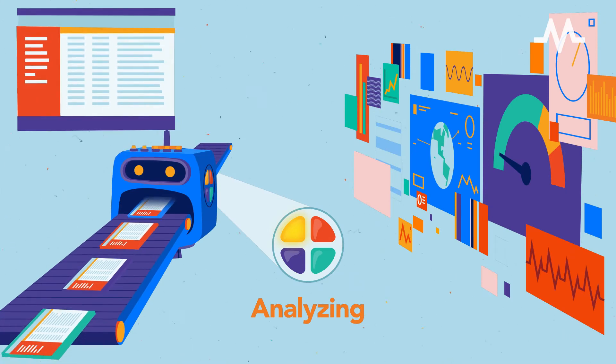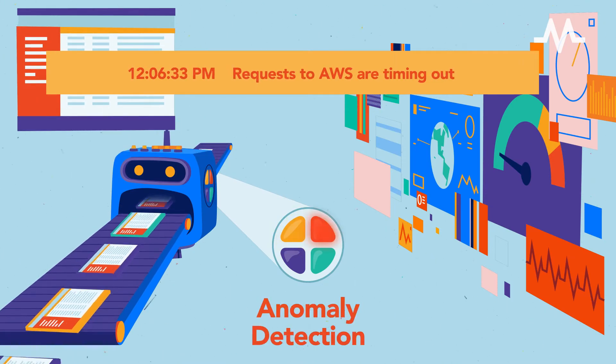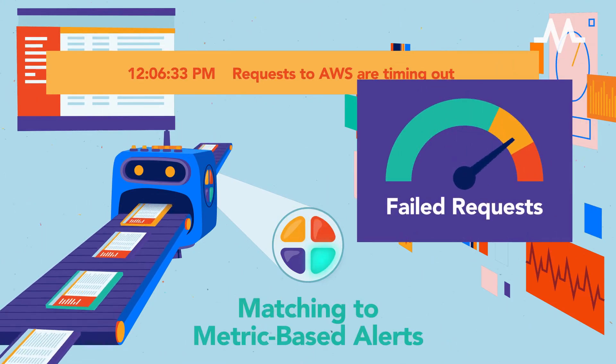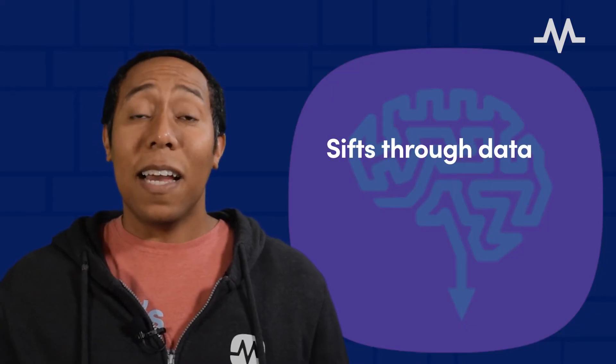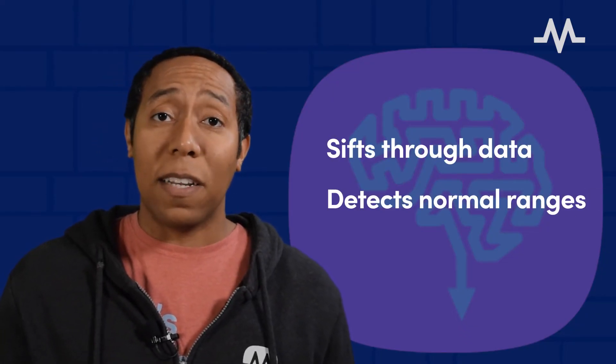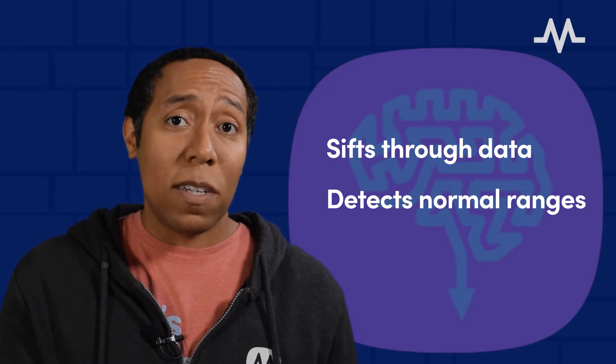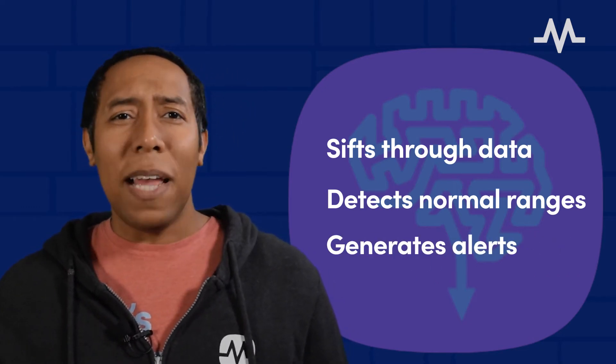The heart of any early warning system is its AI and machine learning algorithms that support anomaly detection in any data set, such as IT infrastructure metrics or log data. The system sifts through massive amounts of monitored data, detects normal performance ranges for technical and business metrics, and generates alerts based on anomalies. This makes a big difference in the volume of alerts displayed and helps teams avoid alert fatigue and surface anomalies sooner.